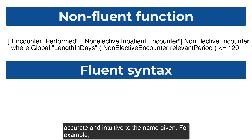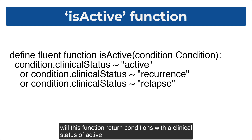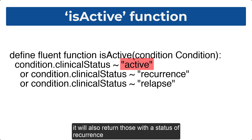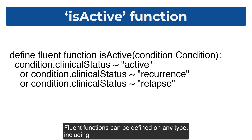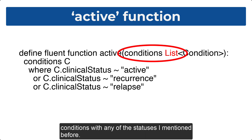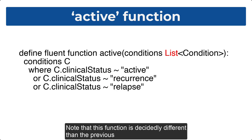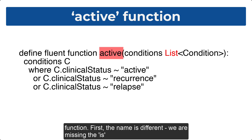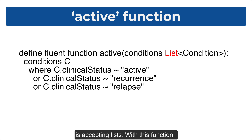Care should be taken in naming fluent functions, like any other definition in CQL, to make sure that the logic you are placing behind the name is accurate and intuitive to the name given. For example, the is active function shown here — not only will this function return conditions with a clinical status of active, it will also return those with a status of recurrence and relapse. Fluent functions can be defined on any type, including lists. A different function titled simply active, shown here, will return a list of conditions with any of those statuses. Note that this function is decidedly different than the previous function — first, the name is different, we are missing the is, but also the argument going into the function is accepting lists.